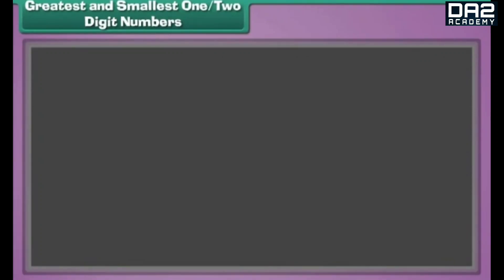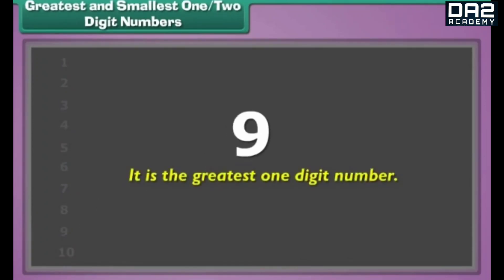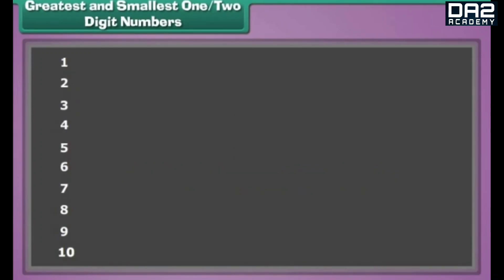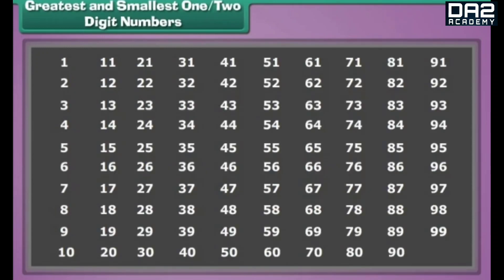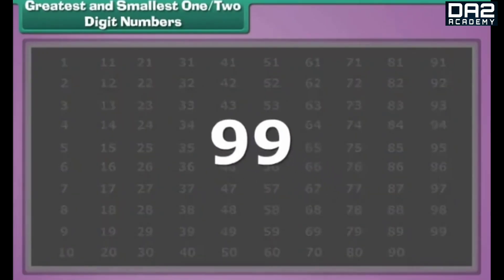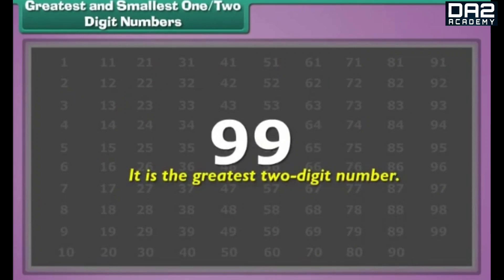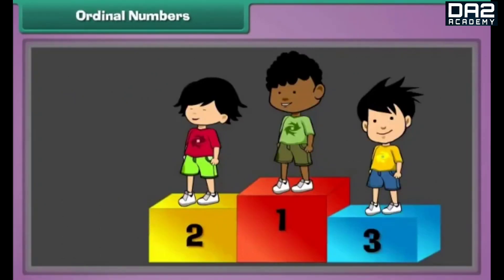Greatest and smallest one or two-digit numbers. The last one-digit number is nine — it is the greatest one-digit number. The first two-digit number is ten — it is the smallest two-digit number. The last two-digit number is ninety-nine — it is the greatest two-digit number.